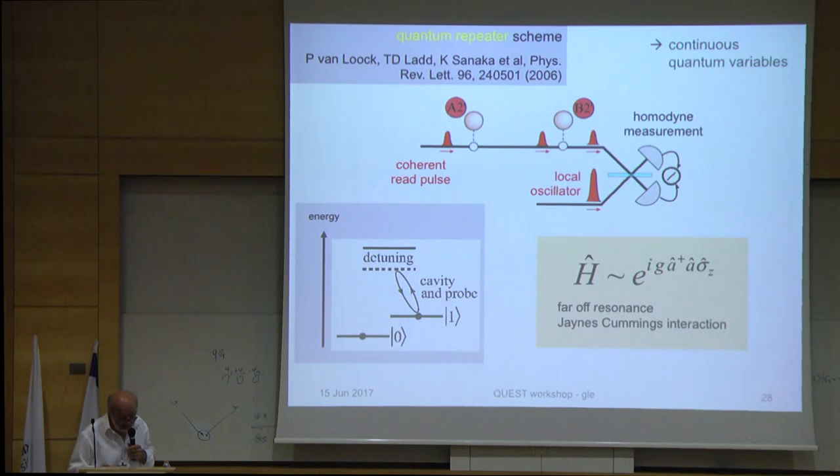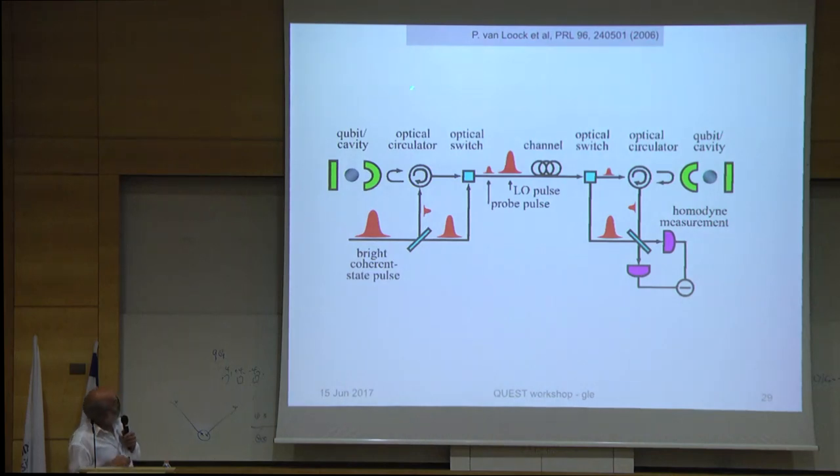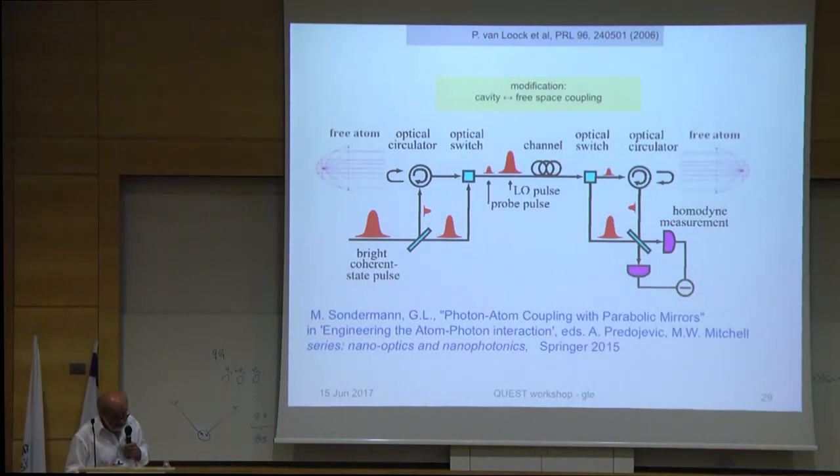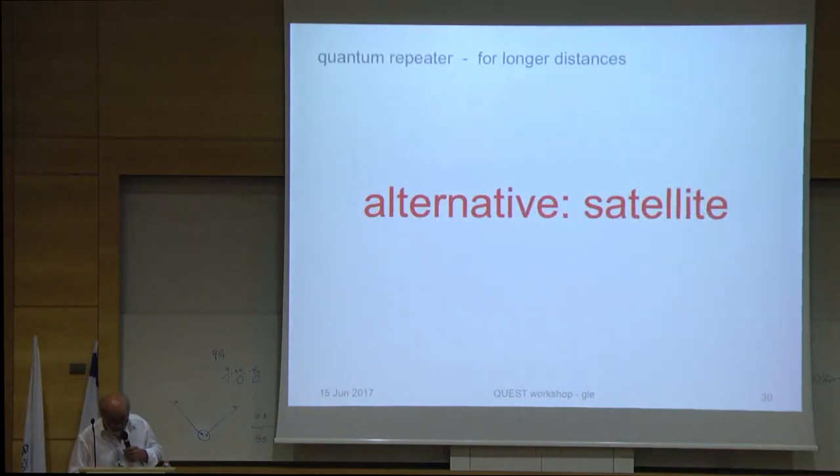If this coherent light field is interacting with this atom in the superposition state, as Klaus Mølmer mentioned already, then of course it's not a coherent state anymore. The two systems are entangled. Then it goes through the second atom. Then you can see two phase shifts, no phase shift, or one phase shift. If there's one phase shift, this is what you post-select on, and you don't know if the phase shift came from this or this atom, and if you post-select on this measurement, you entangle these two atoms. With a phase shift maybe slightly more than what we have now, this should be possible.